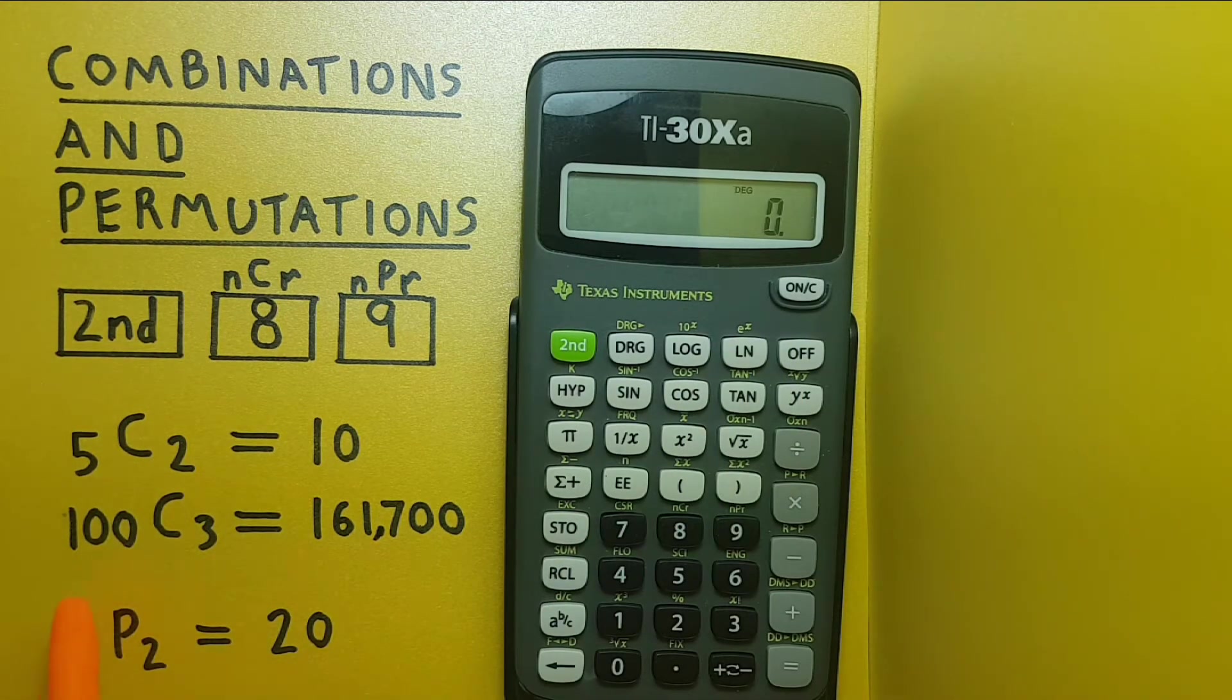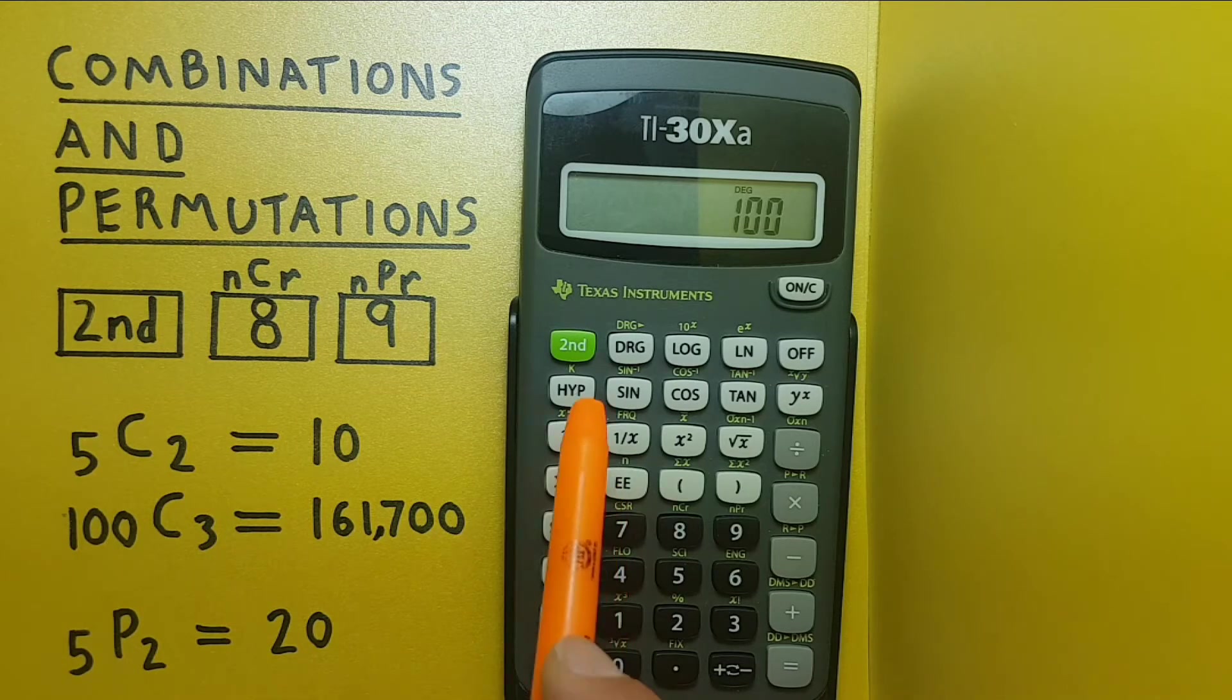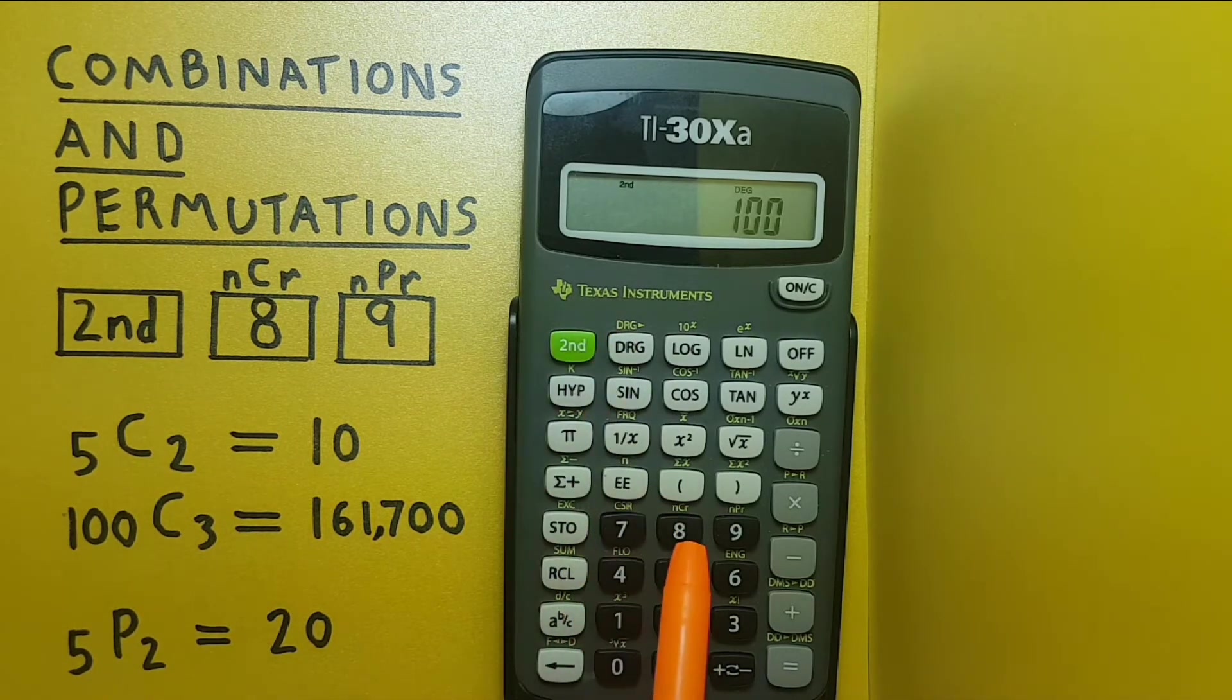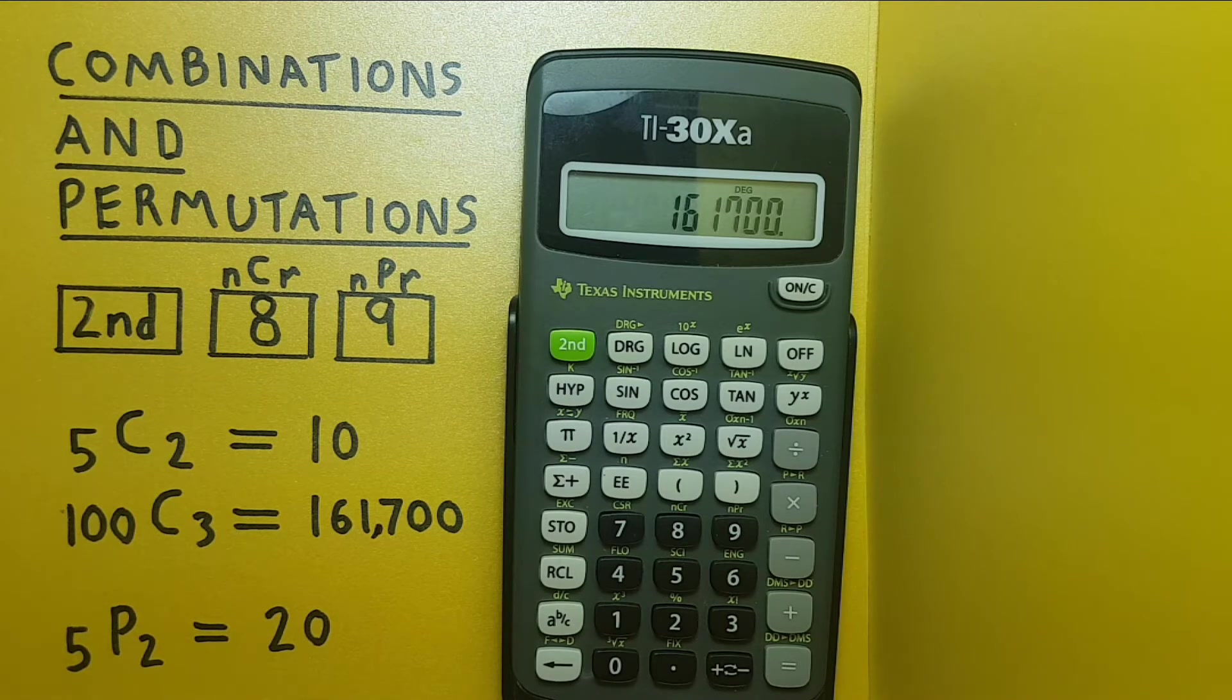Let's try a bigger number. How about if we have a hundred objects and wish to choose three. One hundred, second function eight, three equals and we see there are 161,700 different ways to do this.